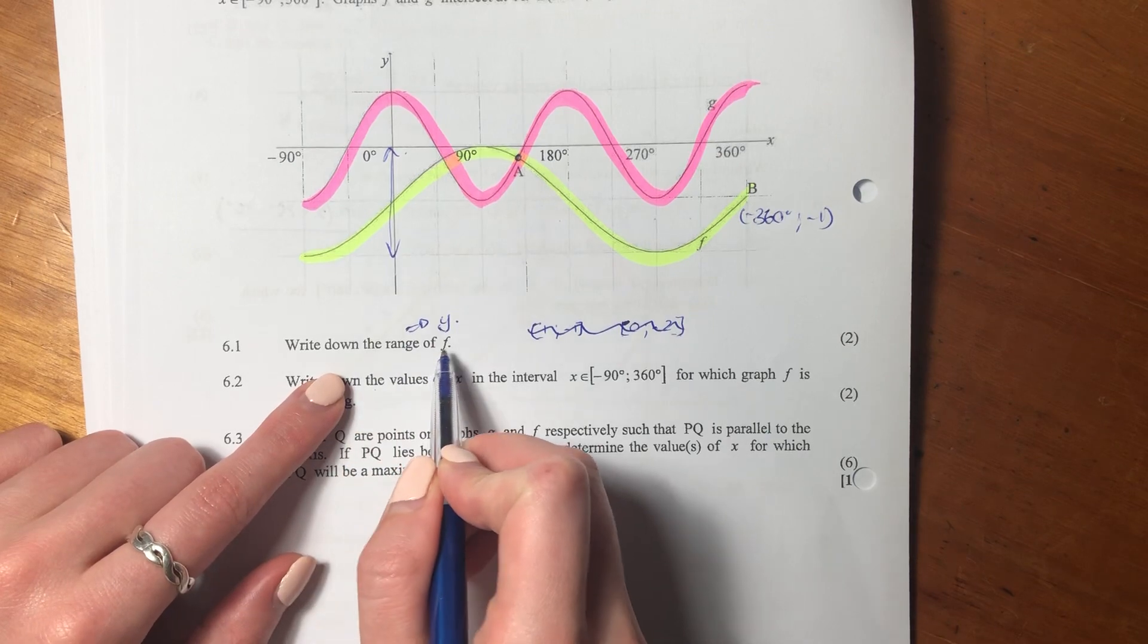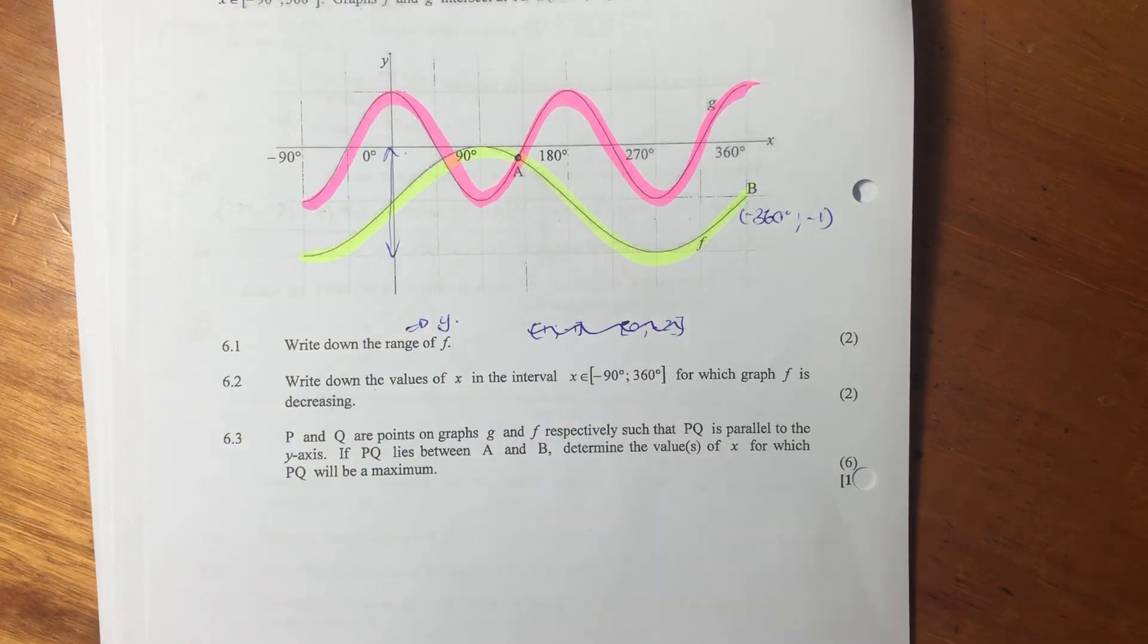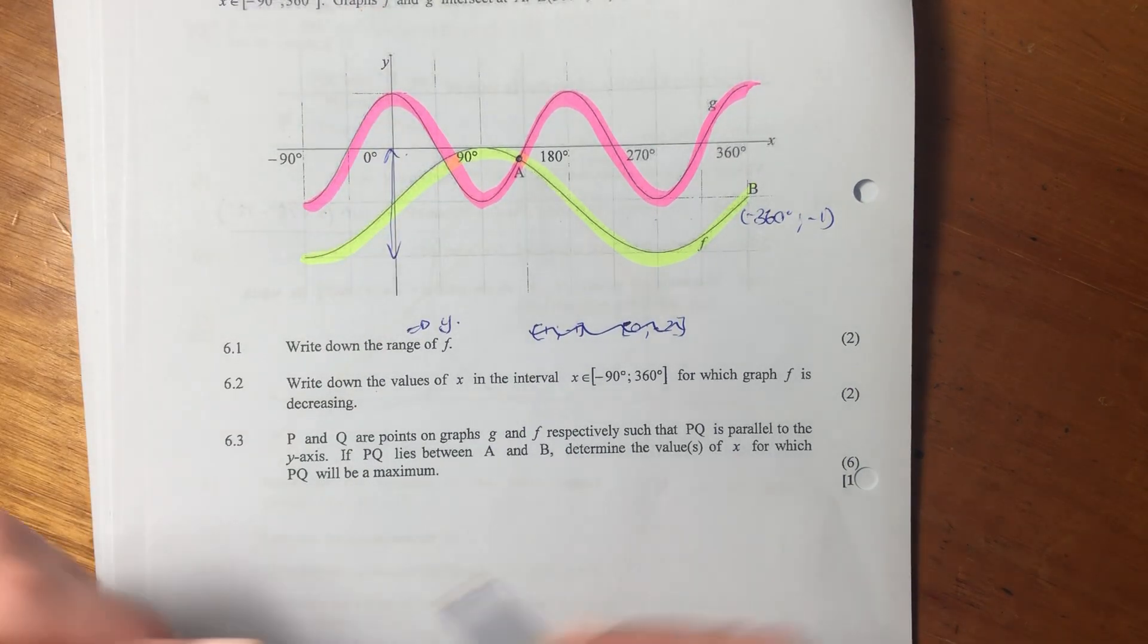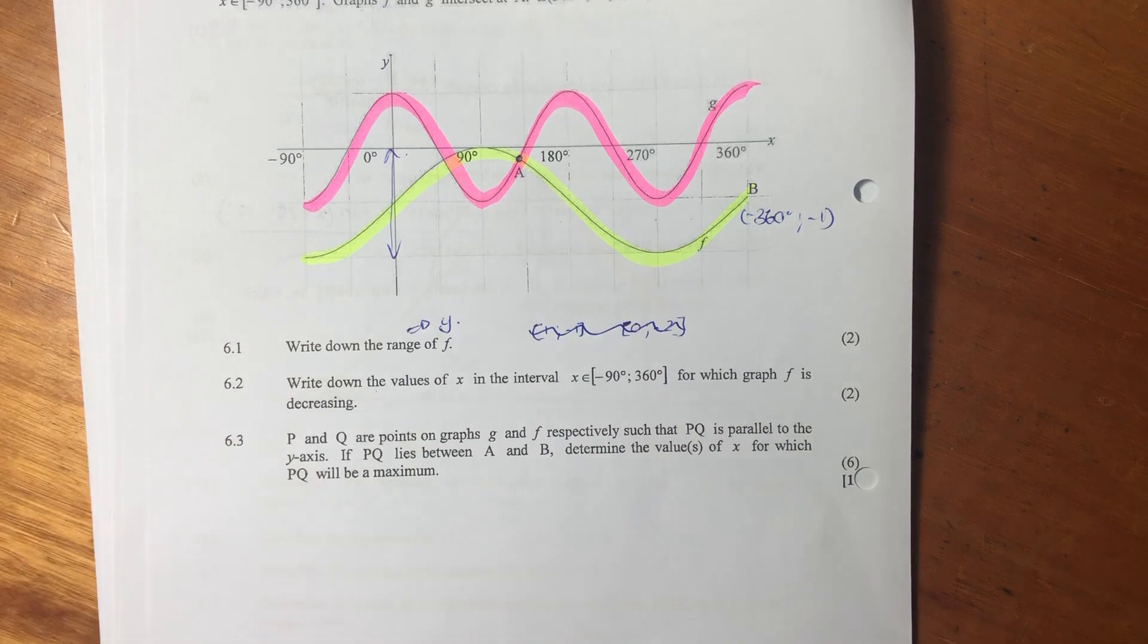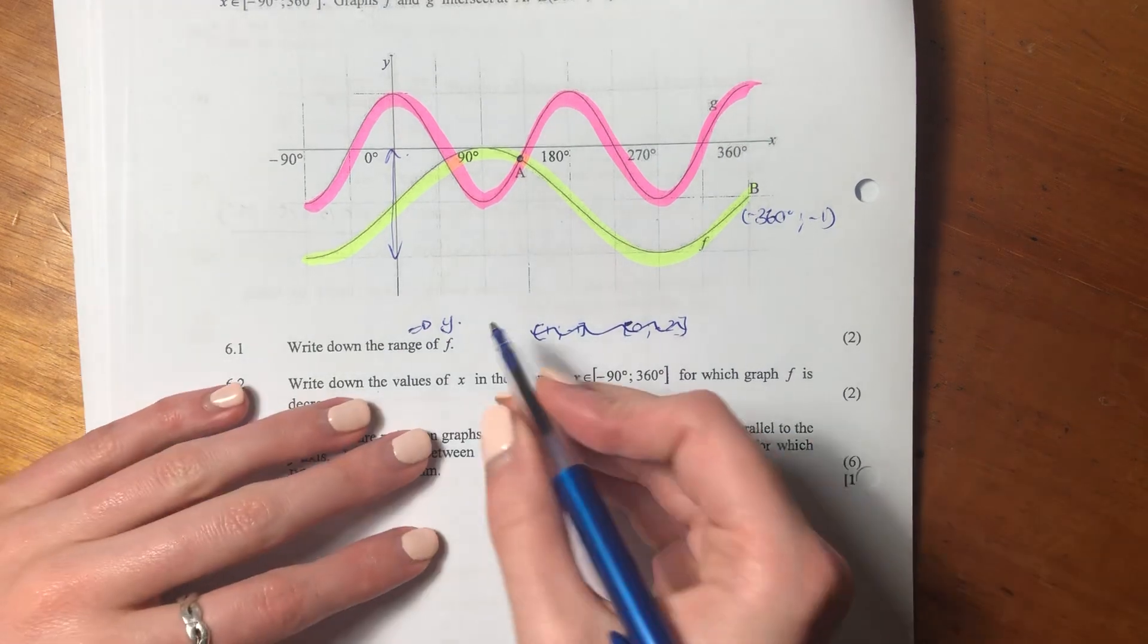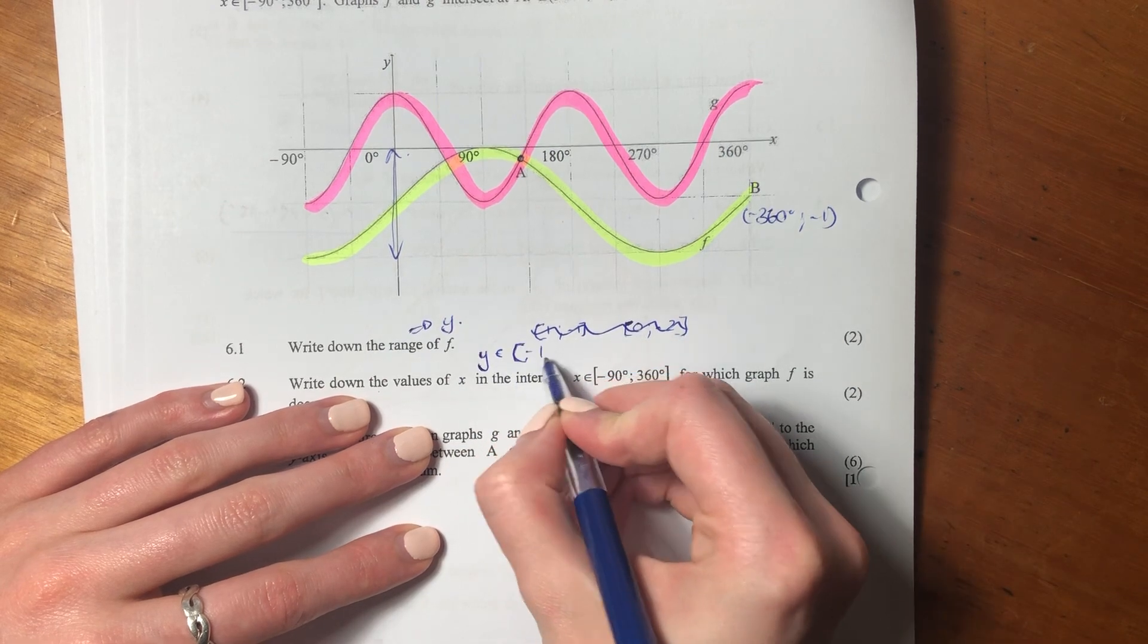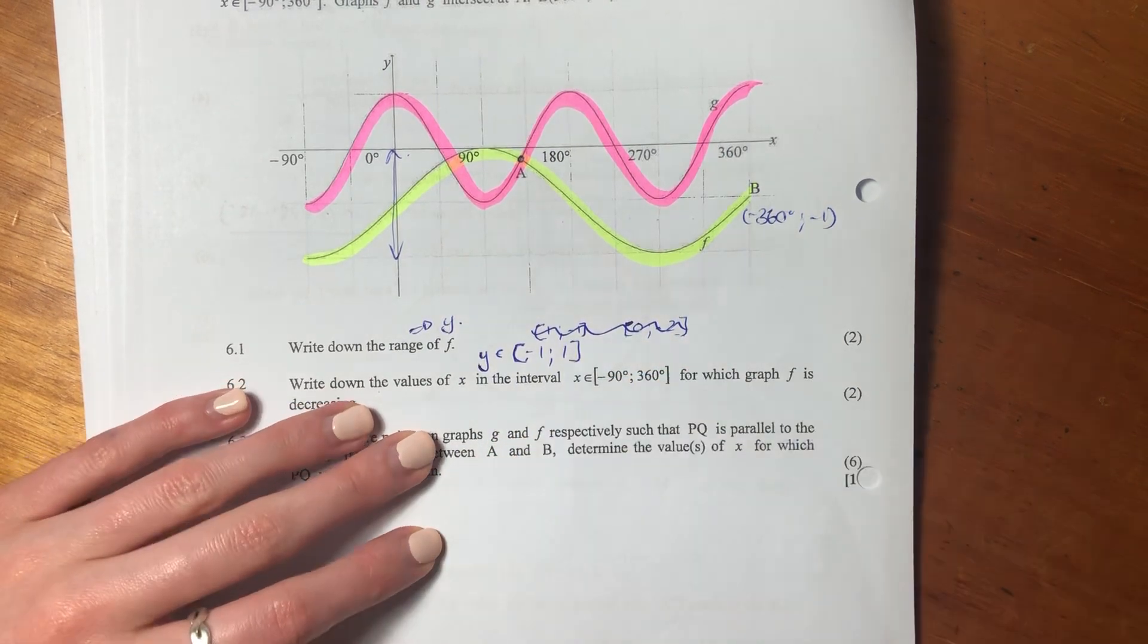Now it says, write down the range of f. When you see the word range, you should automatically think we're looking at y. Now, if it was just a normal sine graph, so if it was just f(x) equals sin x, then our y would be an element of inclusive negative 1 to 1.